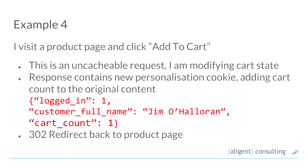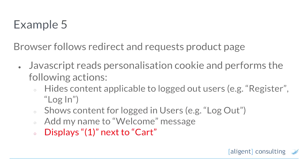As I continue to browse around the site and add a product to cart, this is much more of the same. We're modifying my cart state — this is not something we can cache. We intercept the response and add a cart count to a cookie. Magento will 302 redirect me back to the product page. We'll go through the same personalisation stuff — hide the login link etc. — and this time we'll also update the number of items at the top of the page.